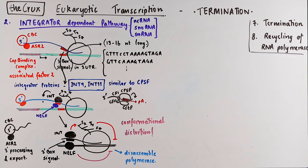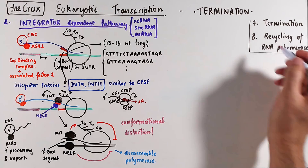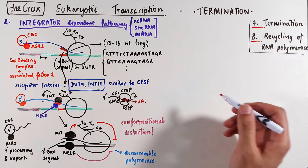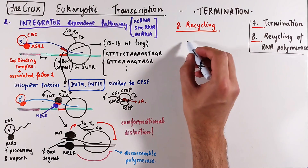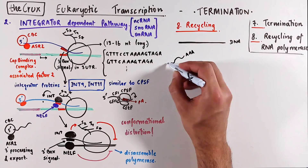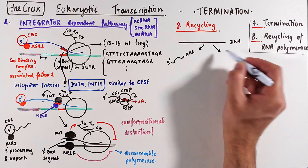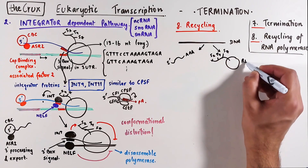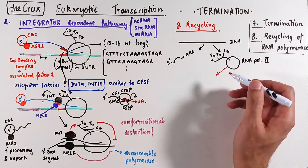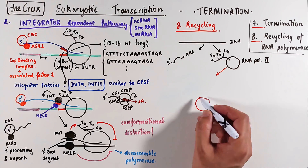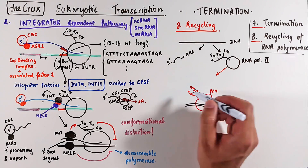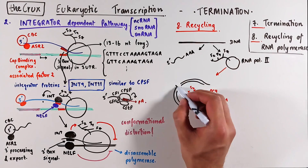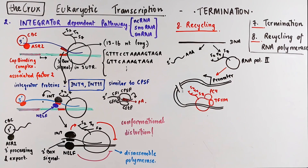That completes the two pathways of termination of transcription, which is step 7. This brings us to the last step — the recycling of the RNA polymerase. After termination, the DNA is left alone, the RNA is released, and the RNA polymerase is released, but its C-terminal domains are still phosphorylated at multiple positions. One way to recycle RNA polymerase is to put it back on the DNA through specific factors like PC4 and TF2H, which through long-range interactions can loop to the promoter and reassemble the polymerase to restart transcription of the same gene.